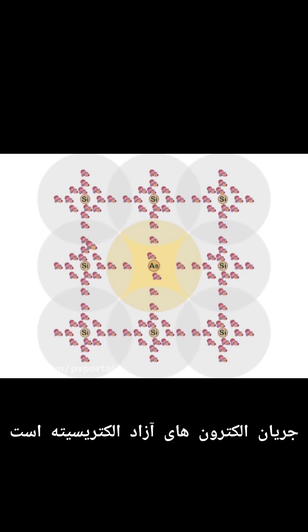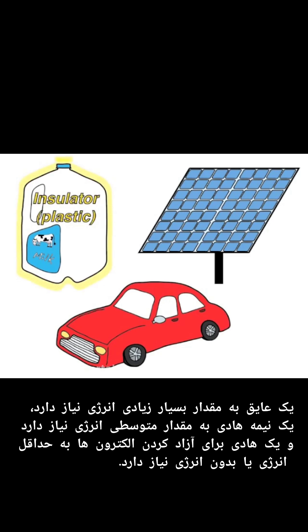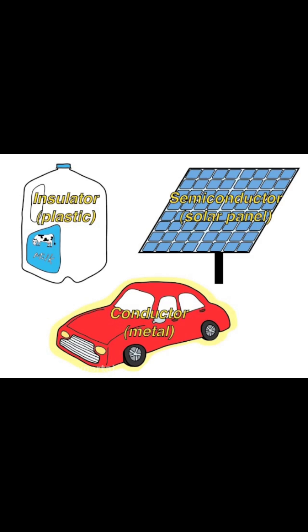The flow of free electrons is electricity. Different types of materials require different amounts of energy to free electrons. An insulator requires a really large amount of energy, a semiconductor requires a medium amount of energy, and a conductor requires minimal or no energy to free electrons.